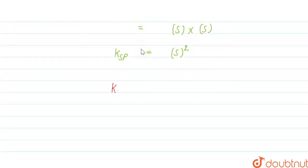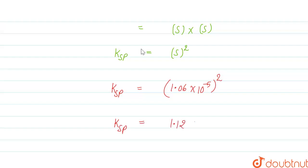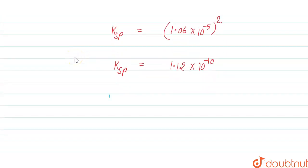Substituting into the expression, Ksp = (1.06 × 10⁻⁵)². Calculating this, the solubility product Ksp of AgCl equals 1.12 × 10⁻¹⁰.